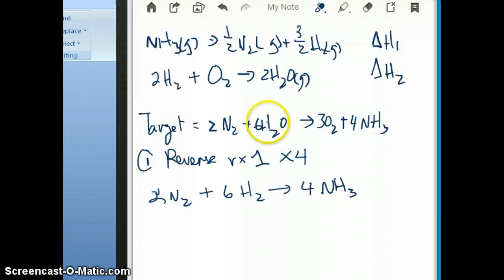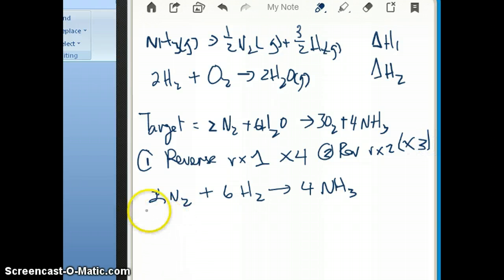Now, the second reaction, what do I need to do with it? Well, if you notice that the H2O is only present in reaction 2, it's not present in reaction 1, so I could use that to determine what I need to do with reaction 2. H2O, I want it to be on the reactant side, and I want 6 of it. Right now, I have the H2O on the product side, so I need to reverse reaction 2 as well. So here's step 2: reverse reaction 2, and then because I want 6, I need to multiply this by 3.